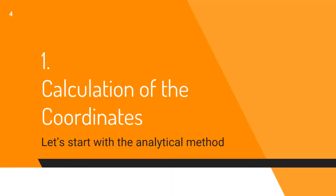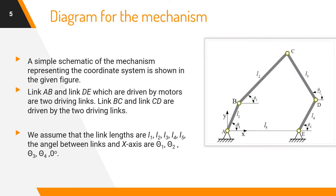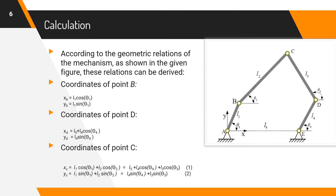Let's start with the analytical method for the calculation of the coordinates. A simple schematic of the mechanism representing the coordinate system is shown in the given figure. Link AB and link DE which are driven by motors are true driving links. Link BC and link CD are driven by the true driving links. We assume that the link lengths are L1, L2, L3, L4, L5. The angle between links and X axis are theta 1, theta 2, theta 3, theta 4 and 0 degree.